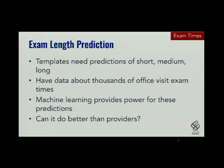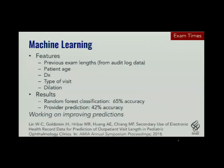The other way we're using this is predicting exam times. Rather than relying on providers to categorize patients, can we use machine learning to do better? We used prior exam lengths along with other features about patients and exams, and found 65% accuracy in categorizing patients as short, medium, or long using machine learning, whereas providers were only about 42% accurate. We're still working on improving accuracy, hoping this will help us schedule patients even more effectively.